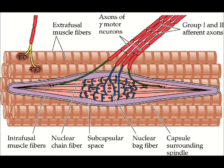We have learned earlier that muscle spindle is involved in reciprocal inhibition while Golgi tendon organ is involved in autogenic inhibition. Now we are going deeper into the structure of muscle spindle. In this picture, we can see there are two types of axons reaching the muscle spindle: one is called afferent and the other one is motor neuron.